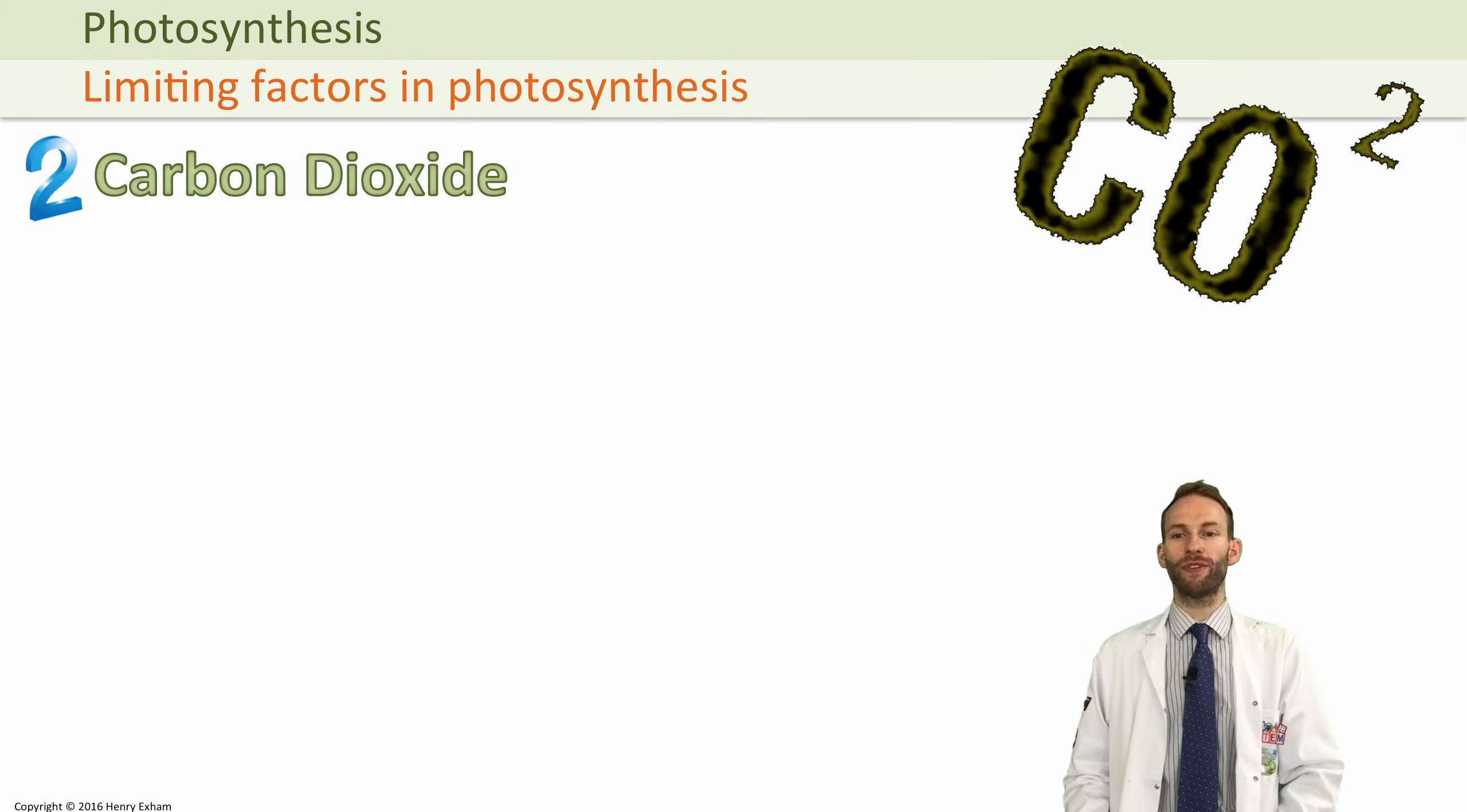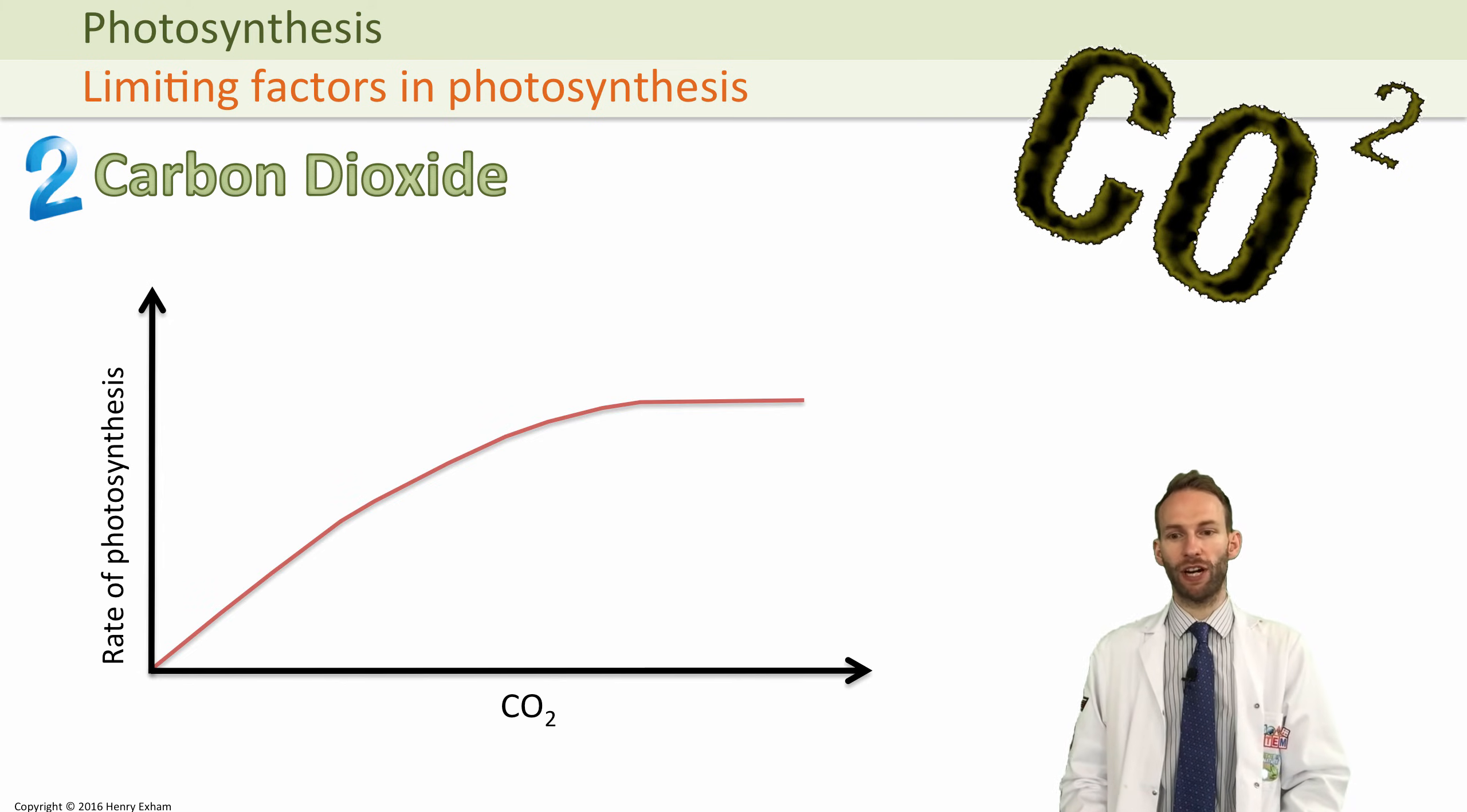We need carbon dioxide in the light-independent stage for the Calvin cycle. Too little carbon dioxide means we're not going to be able to produce enough glucose, so it's not going to be very effective. But if we increase the levels of carbon dioxide, we increase the rate of photosynthesis until something else like light or temperature becomes a limiting factor.